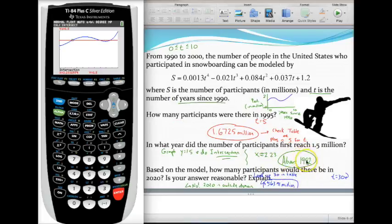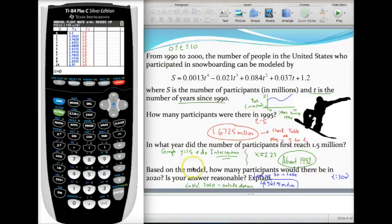Next they asked me how many participants would there be in the year 2020. Like we did the first time we could check this in our table. In 2020 that's 30 years after 1990, so I have to scroll way down to when x is 30. As you're doing that you'll probably start to notice that your y values are getting really really big.